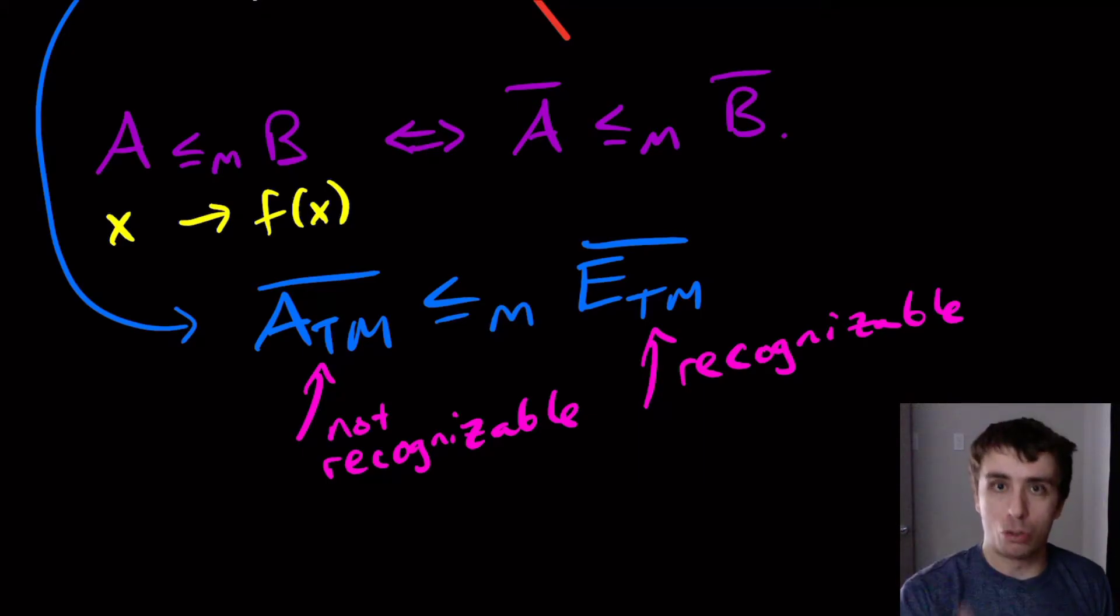Well, we can just start trying strings for a certain number of steps each time and keep increasing that limit. And if it ever accepts something at some point, then we will say, yeah, we have non-empty language and then therefore we could say accept here.